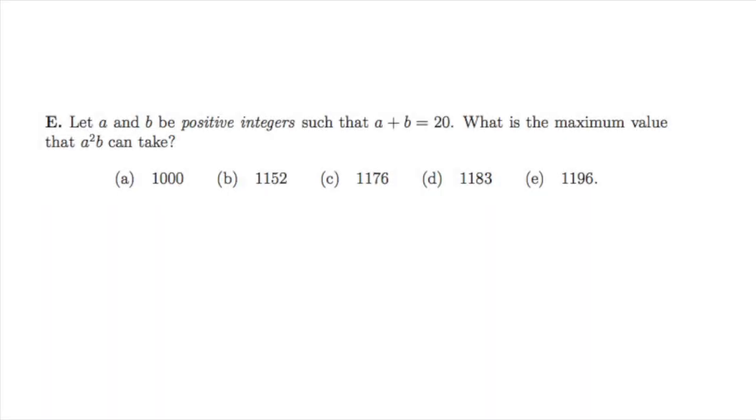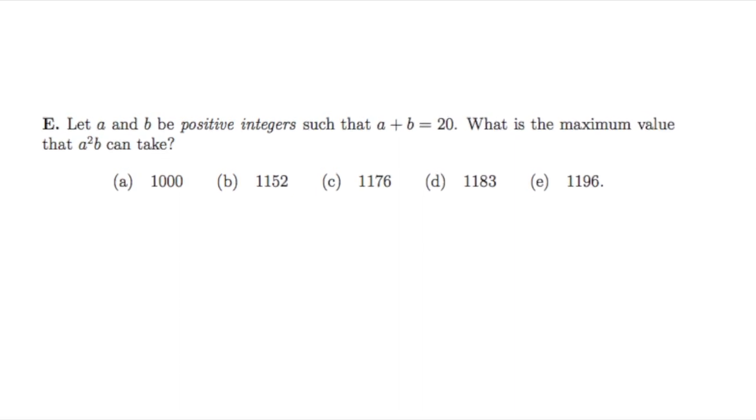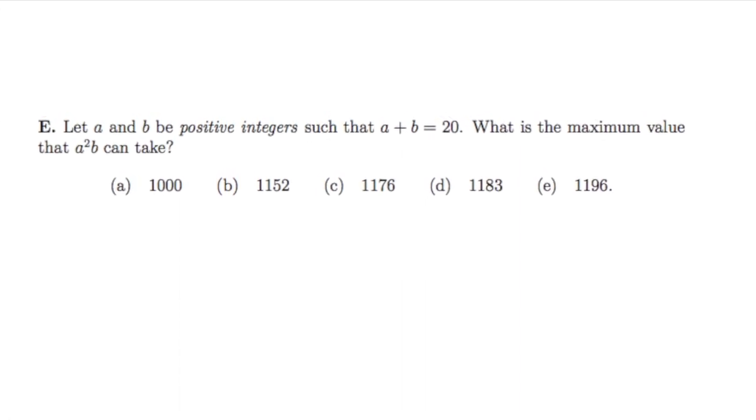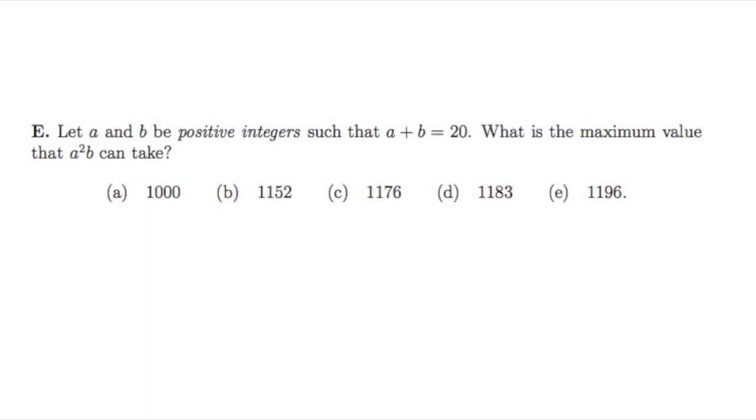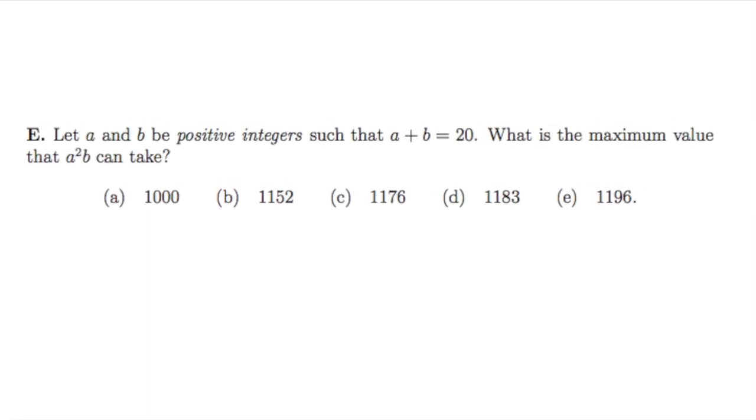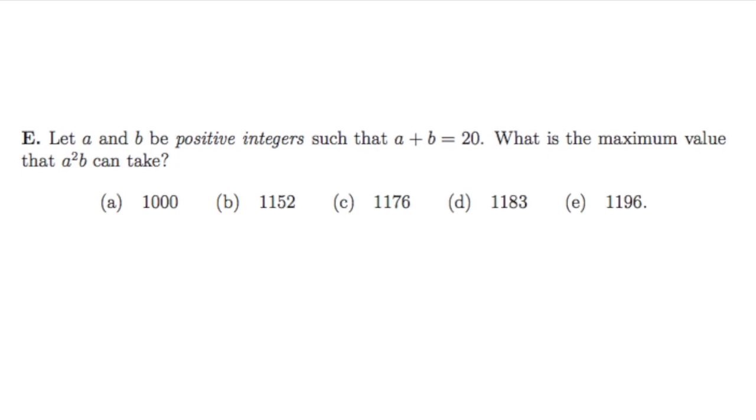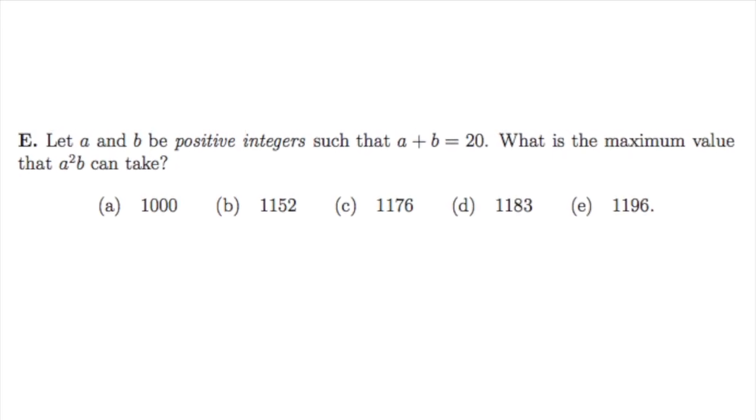Hey everyone, today we're going to be looking at question 1e of the 2017 MAT exam. We are told that a and b are positive integers, such that a plus b equals 20. And we need to work out what the maximum value that a squared times b can take. We are given five possible answers, but brute force calculation will take way too long. Is there a smart way to go about this?